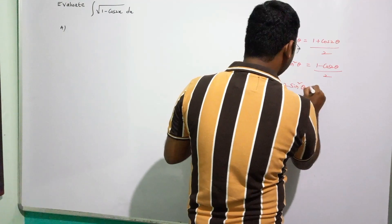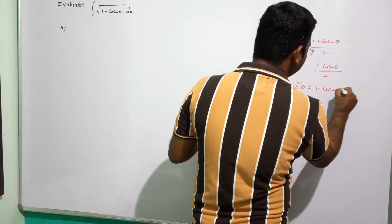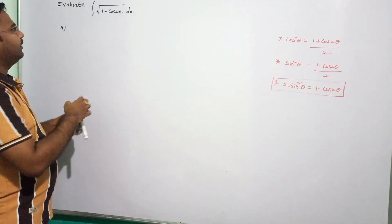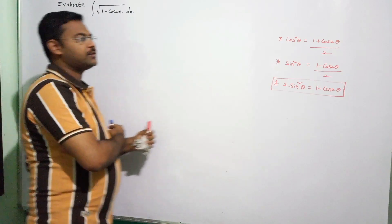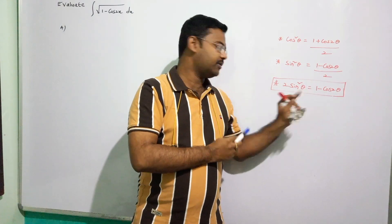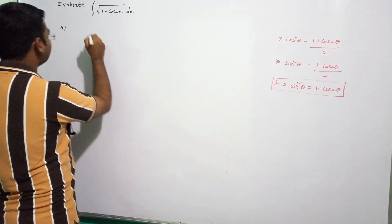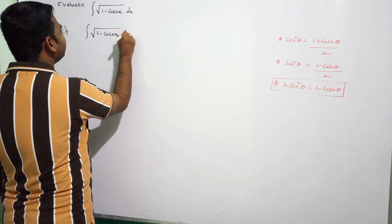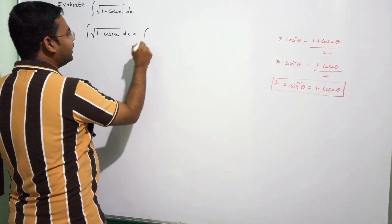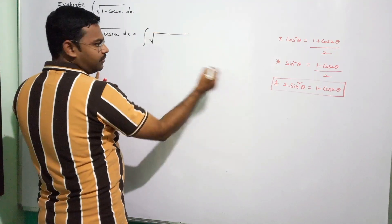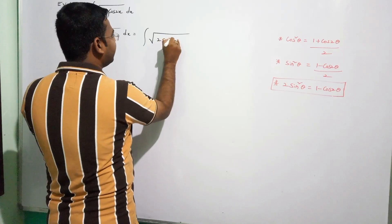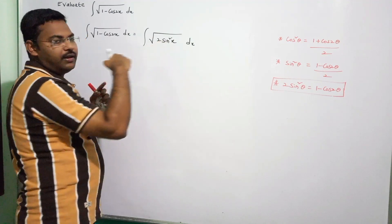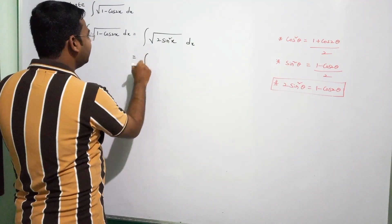Using the formula: 2sin²θ = 1 − cos2θ. So 1 − cos2x = 2sin²x. The integral becomes integral of √(2sin²x) dx.